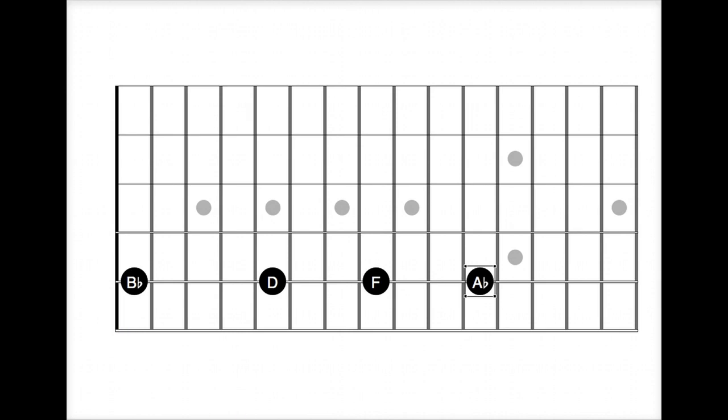Now if we look more closely at this, from here to here, that's your major third. From here to here is the minor third. And then from here to here is another minor third.